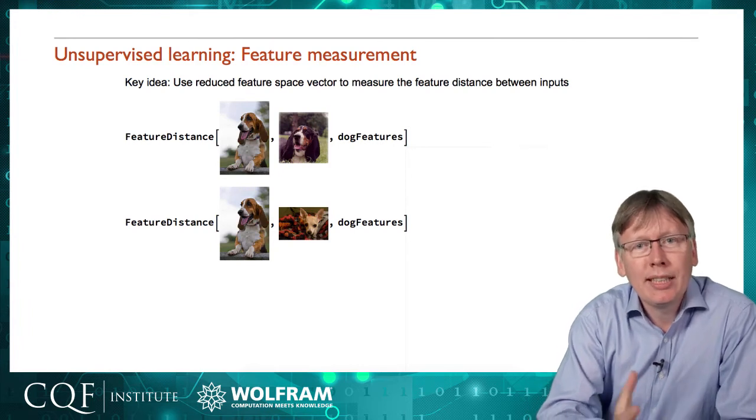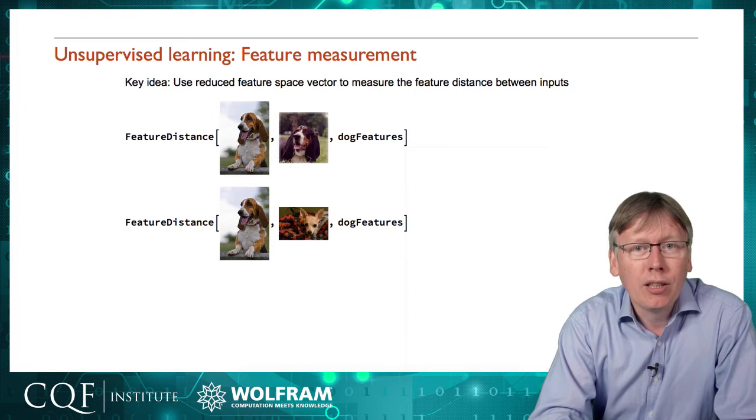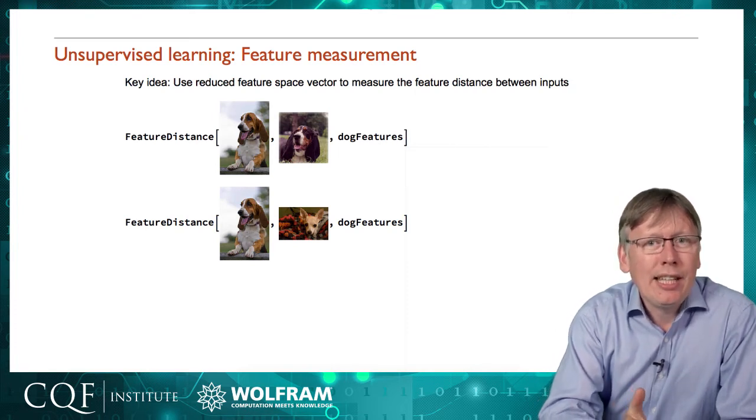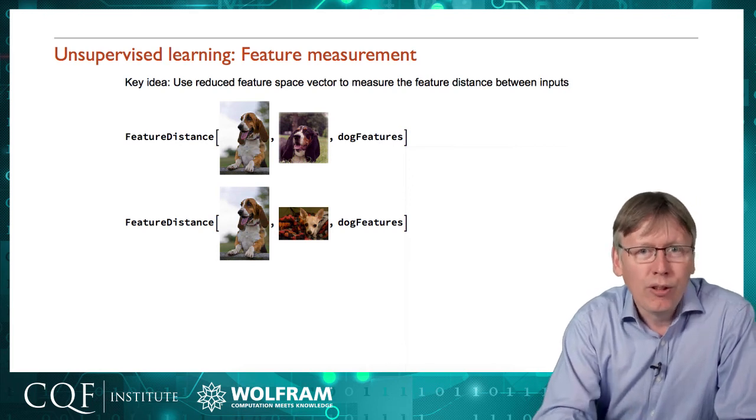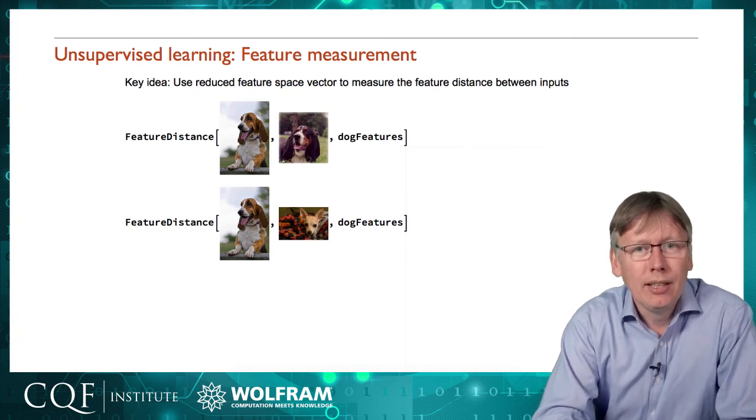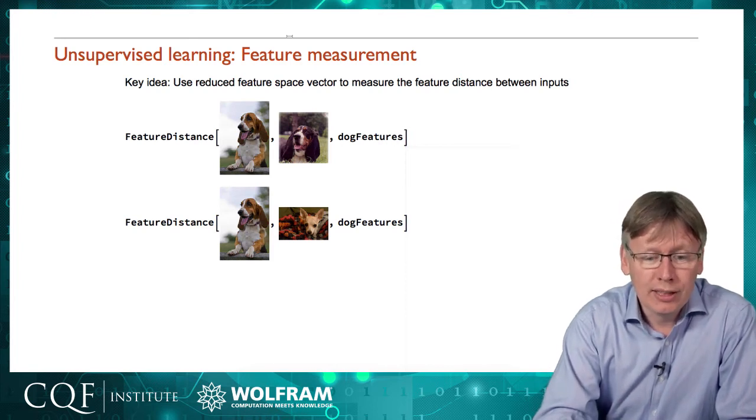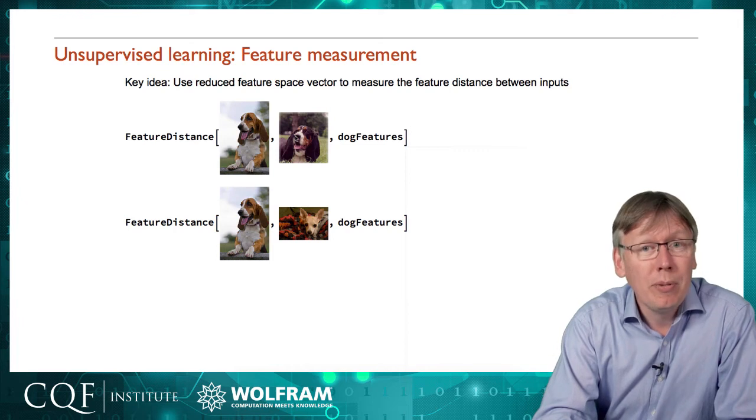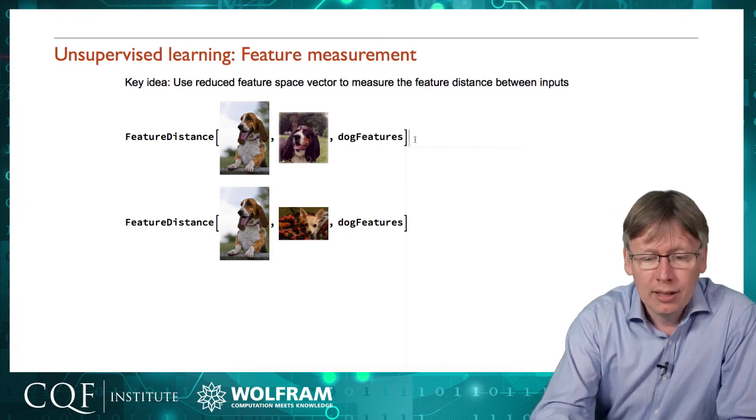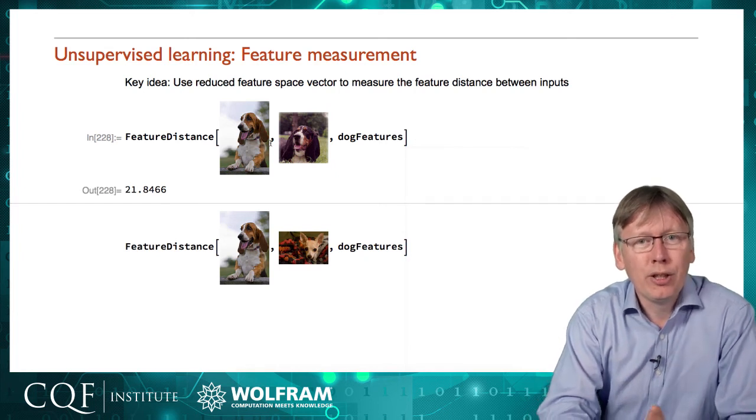Once we have this tool of being able to take a set of data and extract salient features, that's most of the work of the unsupervised learning that we talked about at the beginning. I haven't had to tell it anything about there being three breeds of dog or that they're even pictures of dogs or anything about the images. There's been no human supervision. I've just said, here's some data, learn some features. Once we've got that feature extractor, we can start doing some useful things with this.